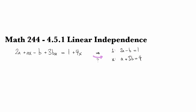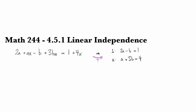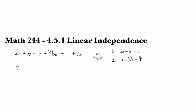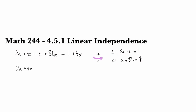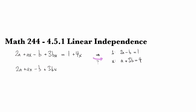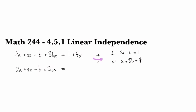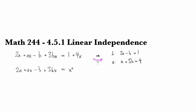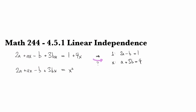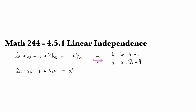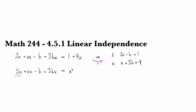There's also sort of the dual version of thinking about this, which is that if I gave you 2a plus ax minus b plus 3bx equals x squared, and I asked you to solve it, you would immediately say you can't solve that. And I could say, okay, why not?